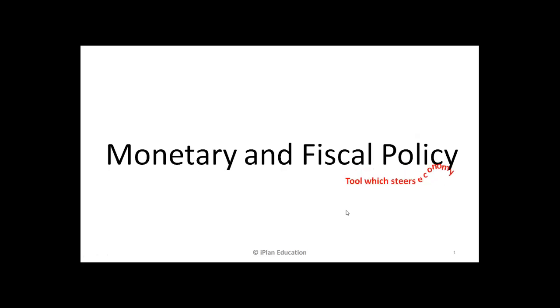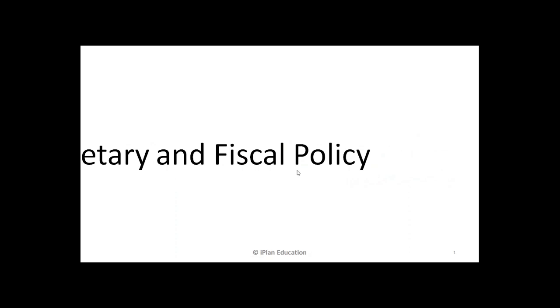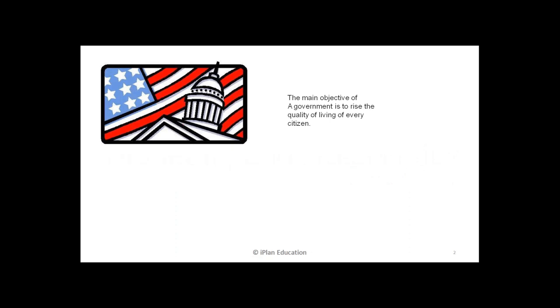Let's discuss Monetary Policies and Fiscal Policy. What is the objective of a government? Government aims to raise the quality of living of every citizen. The poor should get rich, and the richer should not become too much richer. Both should have a fair chance to grow in the economy, so every citizen must live happily.